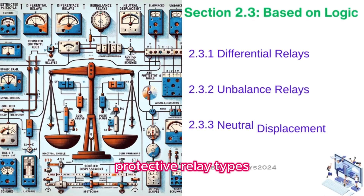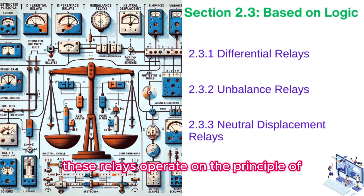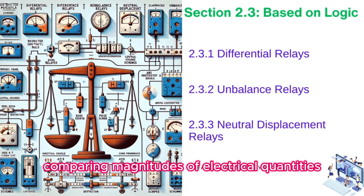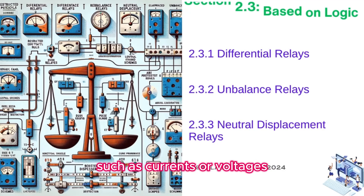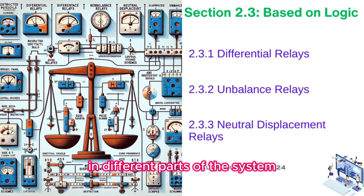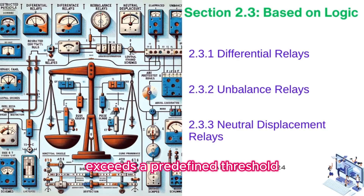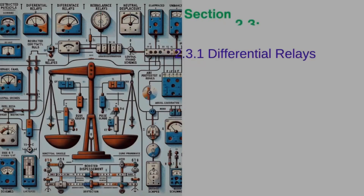Protective relay types based on logic. Differential relays operate on the principle of comparing magnitudes of electrical quantities, such as currents or voltages, in different parts of the system. A differential relay triggers when the difference between these quantities exceeds a predefined threshold, indicating a potential fault.